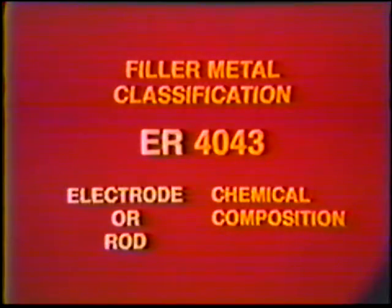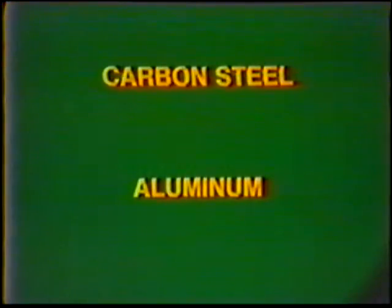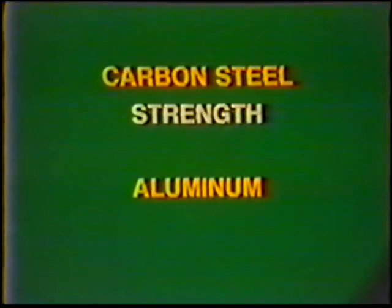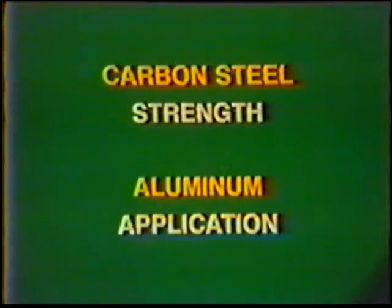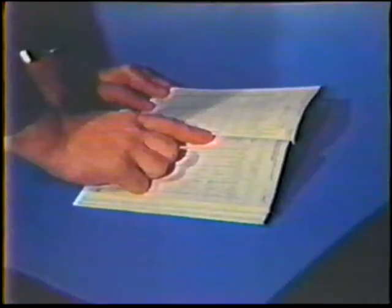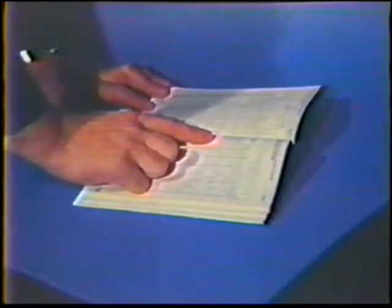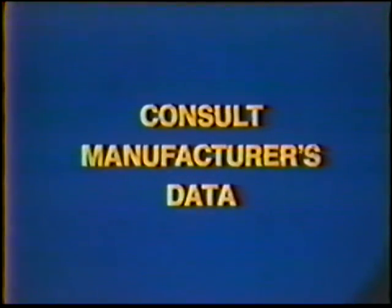The filler metal classifications for aluminum are similar to the base metal classifications. For example, ER 4043 indicates an electrode or rod with a composition similar to a 4043 base metal. Unlike carbon steel electrodes which are normally selected on tensile strength, aluminum filler metals are selected based on their application. Information is available from manufacturers of aluminum regarding weldability and correct filler metal selection, and several filler metal selection charts are available to help with the proper choice.